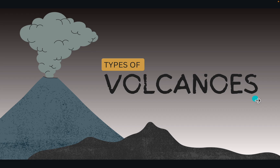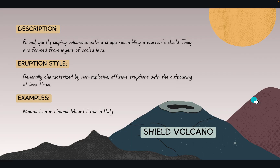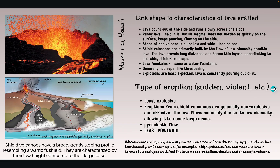So, types of volcanoes — this is very important. The first is the shield volcano, which is a really broad and gently sloping volcano with a shape resembling a warrior's shield. They are formed from layers of cooled lava and are generally characterized by non-explosive effusive eruptions with the outpouring of lava flows. Examples are Mauna Loa in Hawaii and Mount Etna in Italy. This is what Mauna Loa looks like — it's just pouring out lava. It's not really harmful unless you actually go and touch it, which is very dangerous. The lava pours out, it's runny, so it's basaltic magma, and the shape of the volcano is quite low and wide.